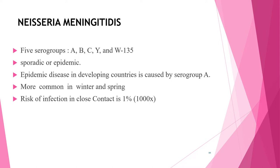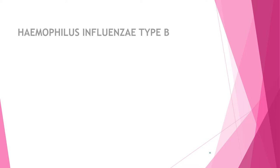Nasopharyngeal carriage of Neisseria meningitidis occurs in 1–50% of adults, and most infections in children are acquired from daycare contacts, colonized adult family members, or ill patients with meningococcal disease. Colonization may last weeks to months. The incidence of secondary cases within a family is 1%, which is 1,000-fold the risk in the general population. Children younger than five years have the highest rates.